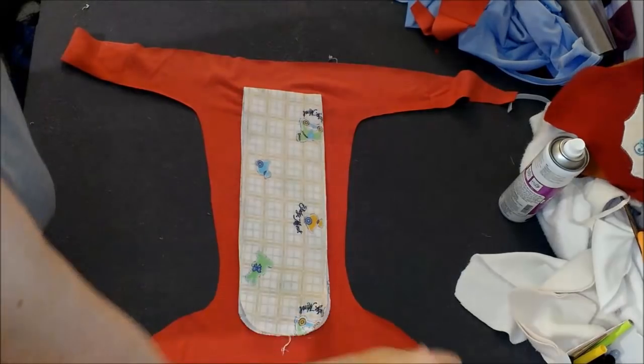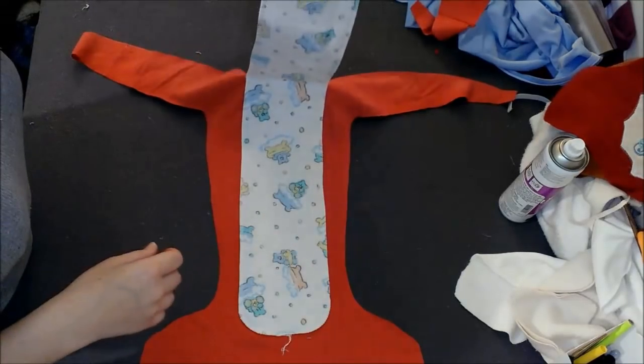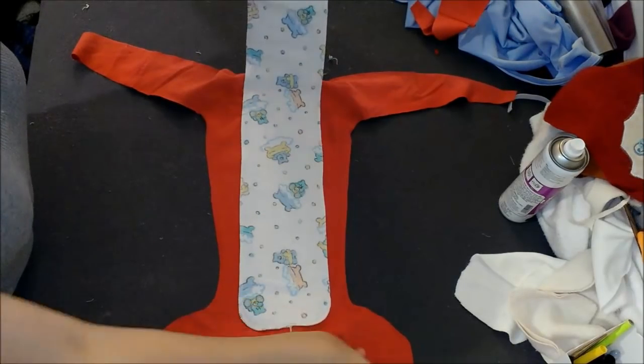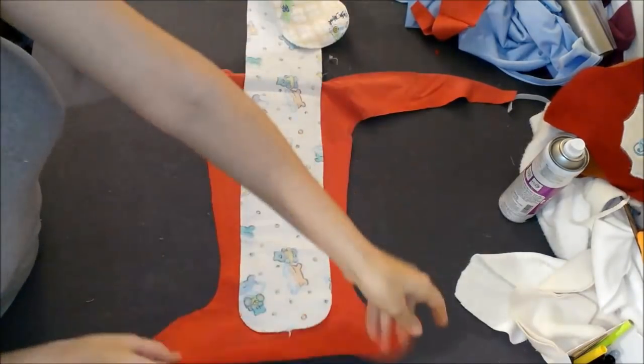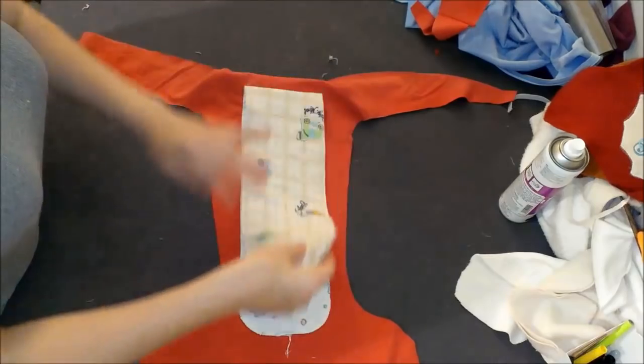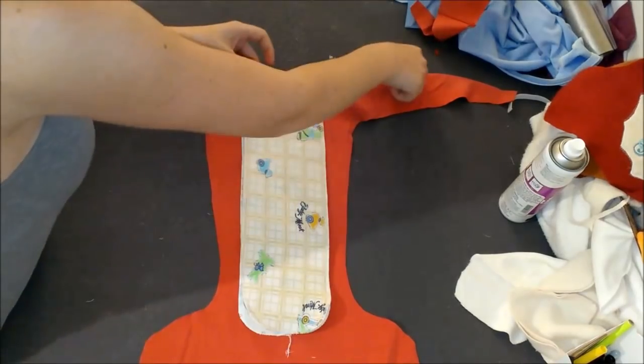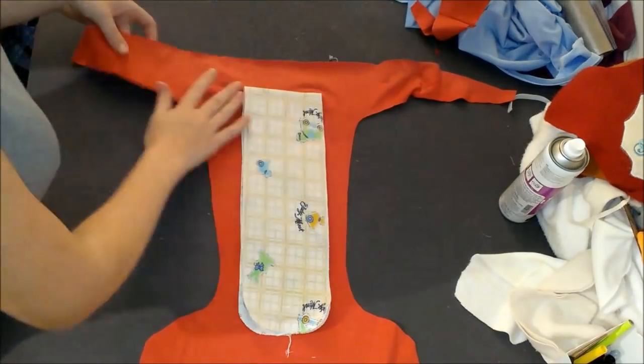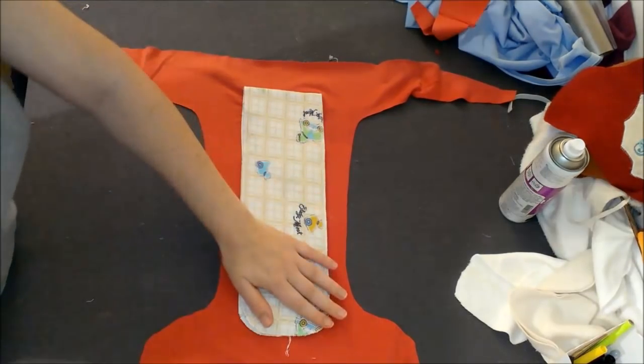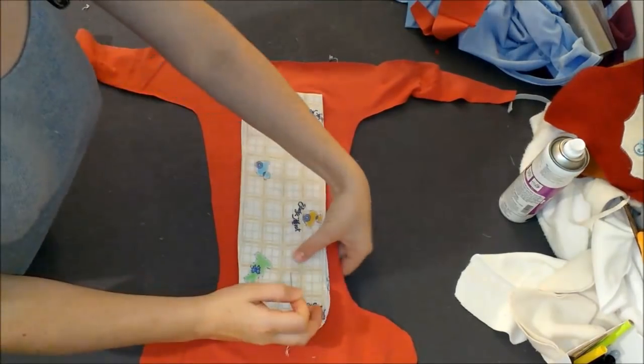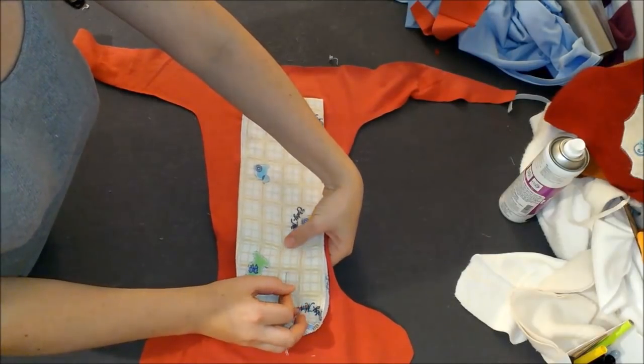So I serged all the way around, and then I sewed half of it down onto the inner part of the diaper, and I left the other half as a sort of flap. This will give you good absorbency, but it won't take a super long time for the soakers to dry. There's tons of different ways that you can do this. This is not the only way.